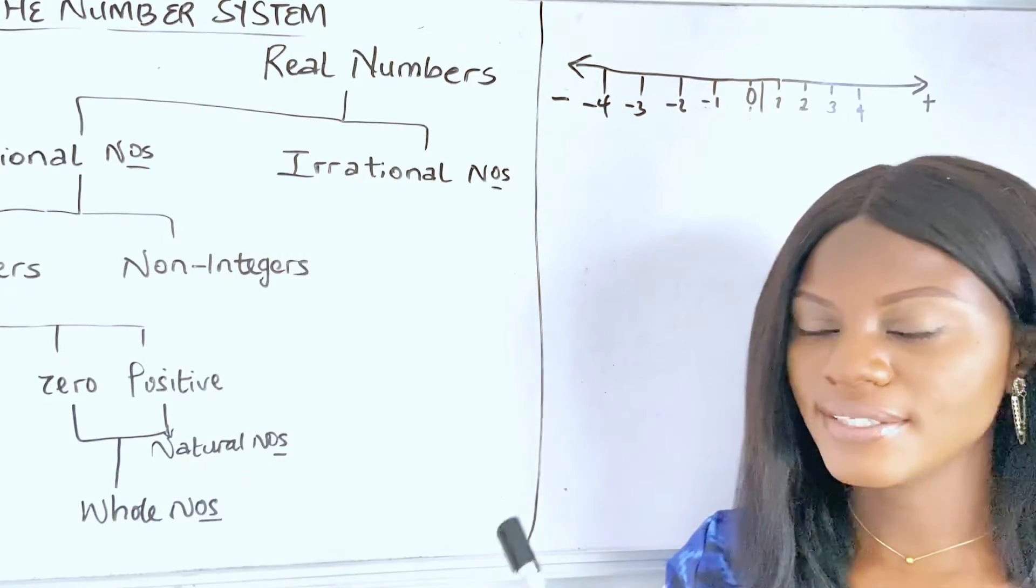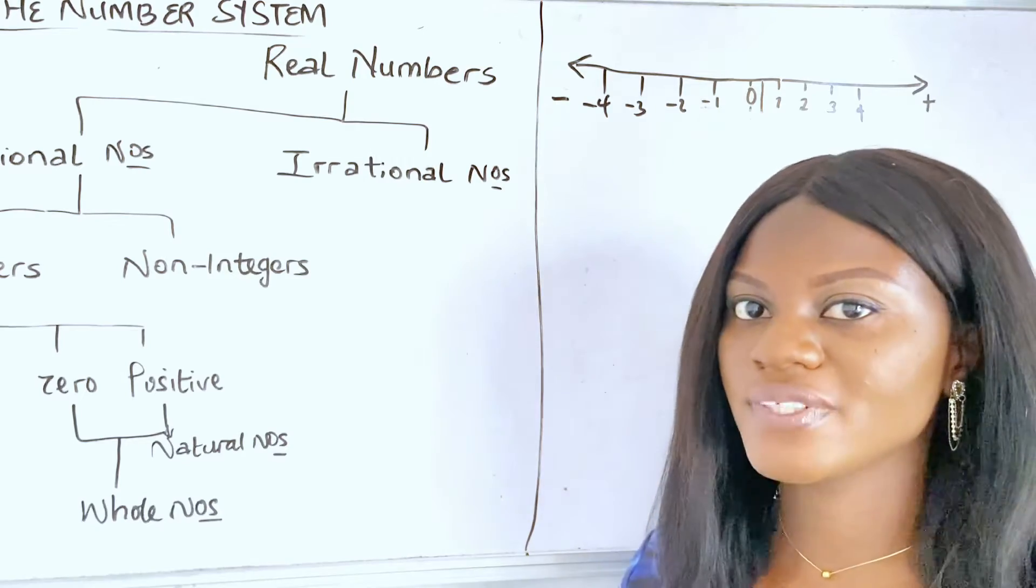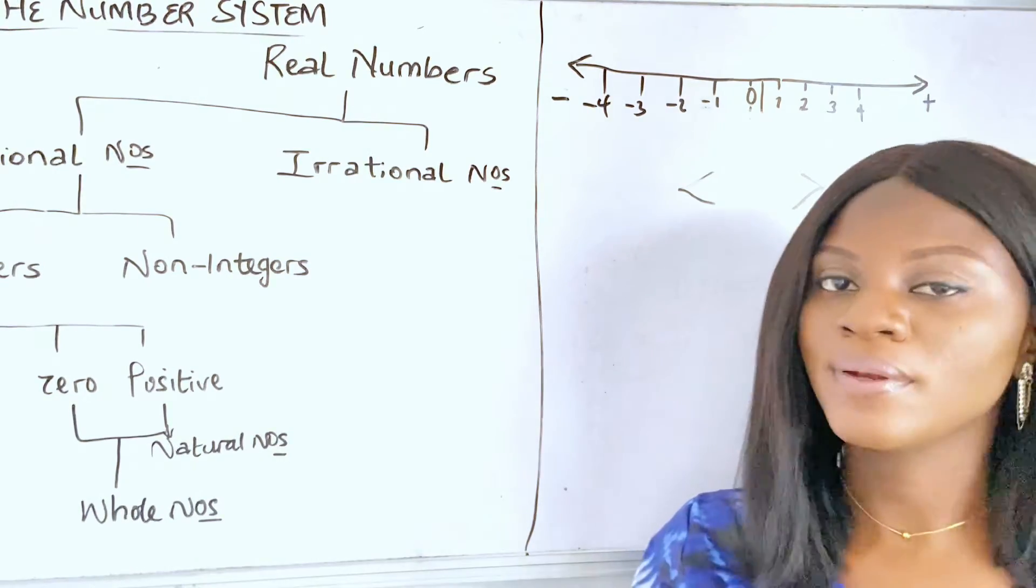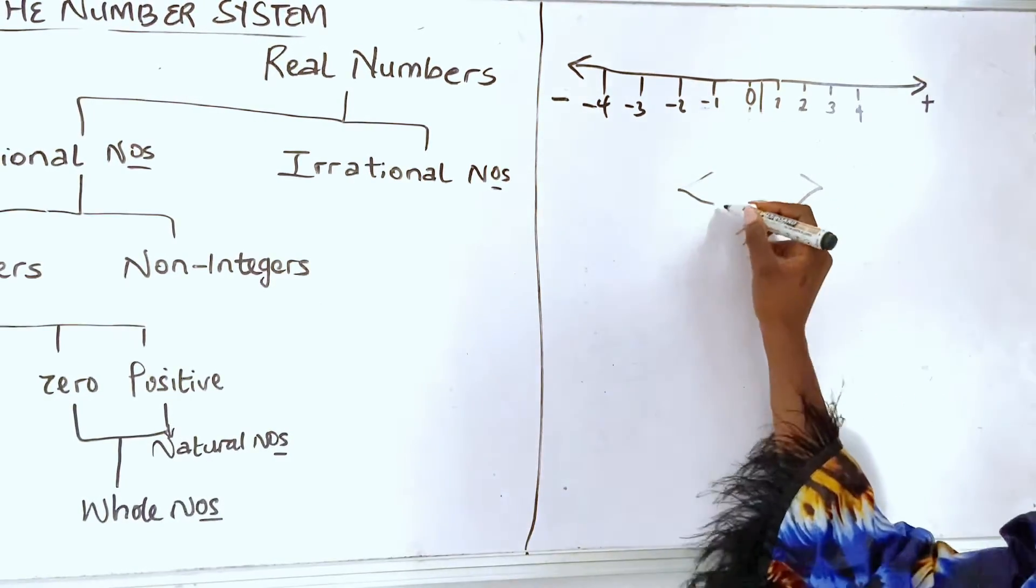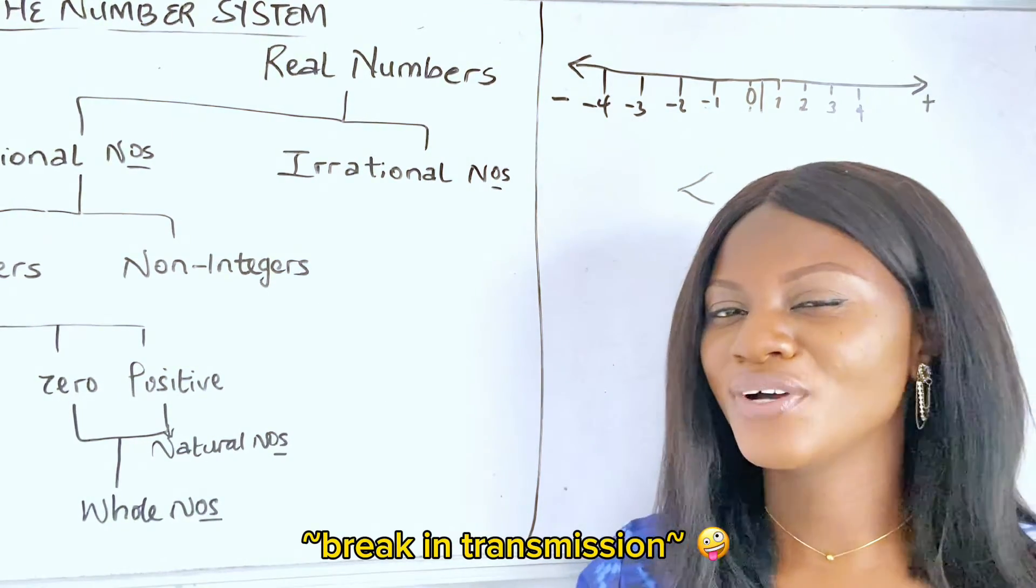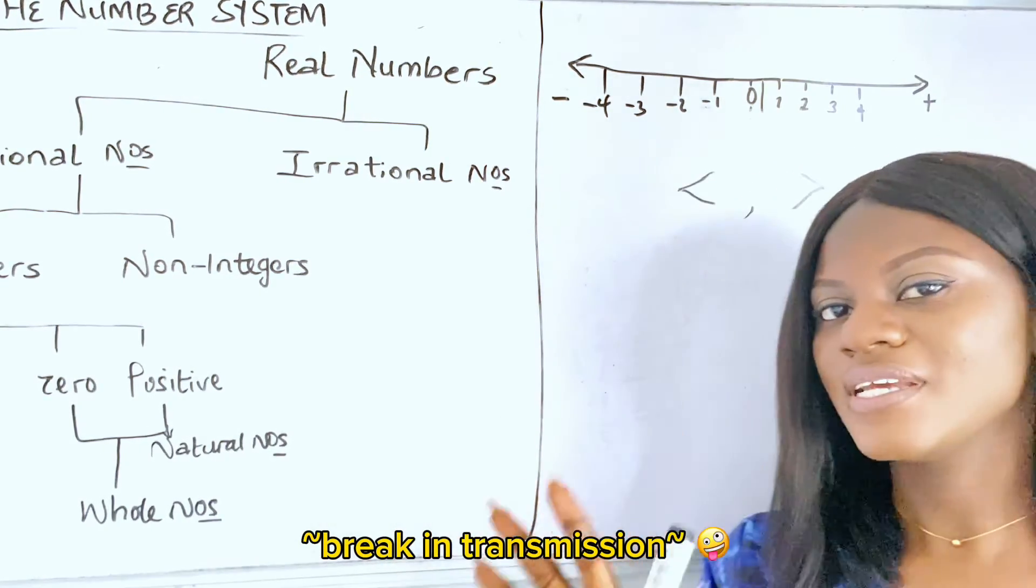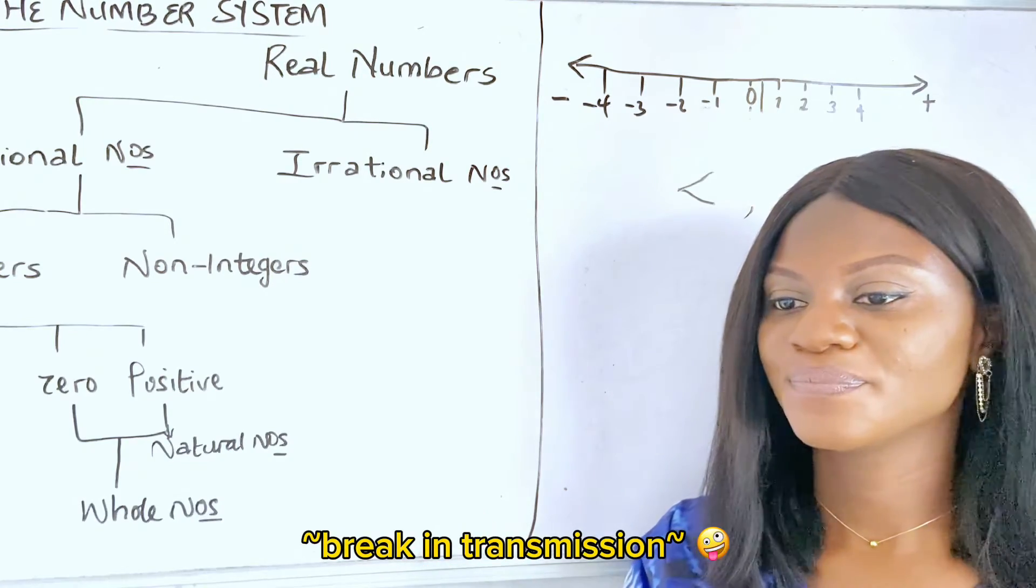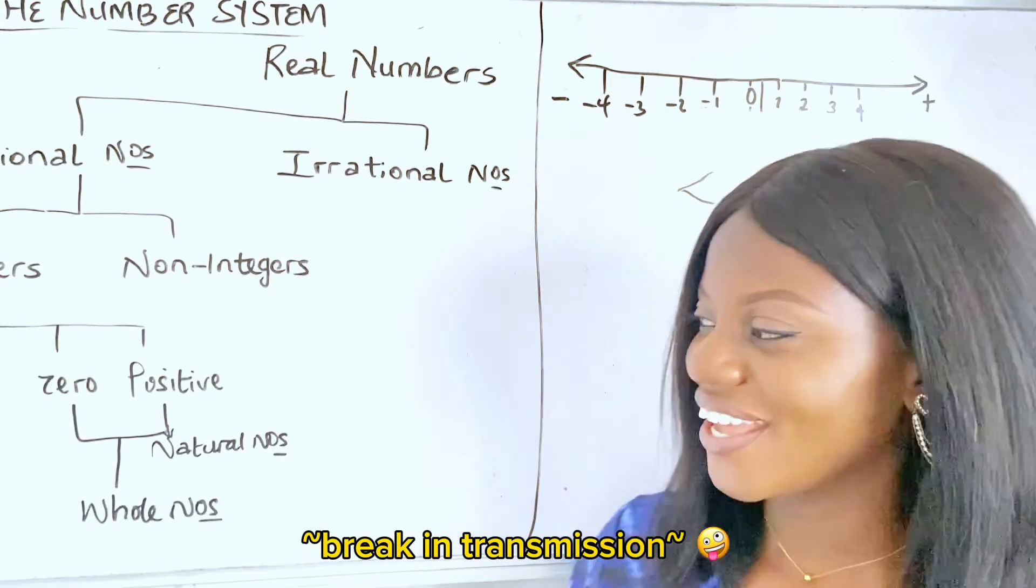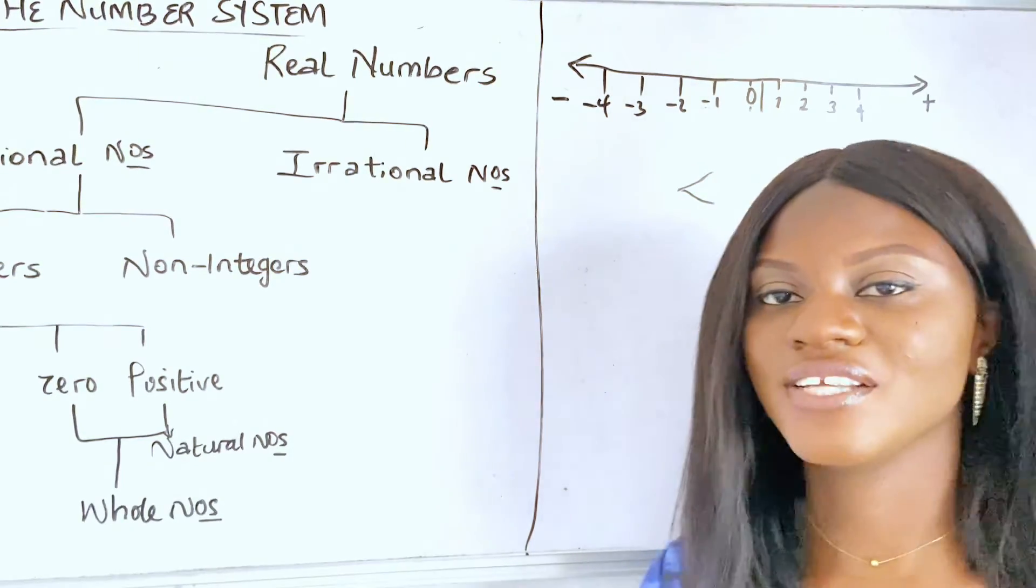Right? Now that we have this number line, it tells you that numbers on the right are greater than numbers on the left. That's where we talk about less than and greater than. Right? So, this is where we come about less than, greater than, and equal to. So, I'm using my back camera, so I'm not sure if I am in the screen. So, pardon any mistake that happens. Okay, so we have less than, greater than, and equal to.